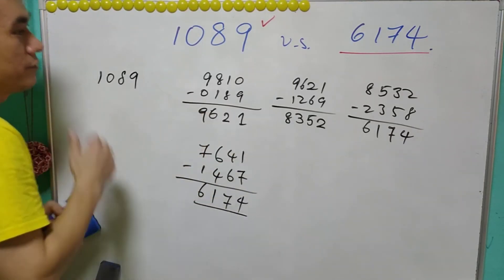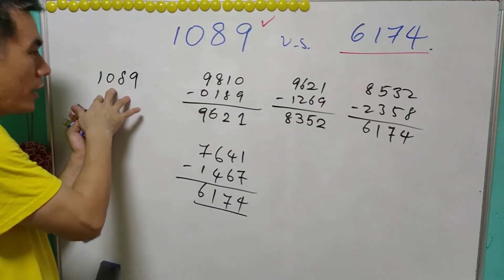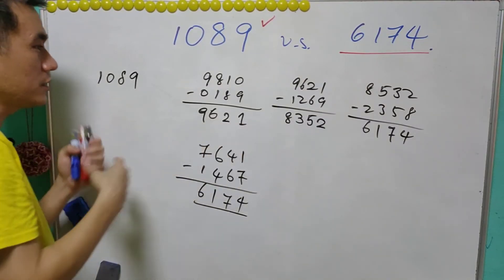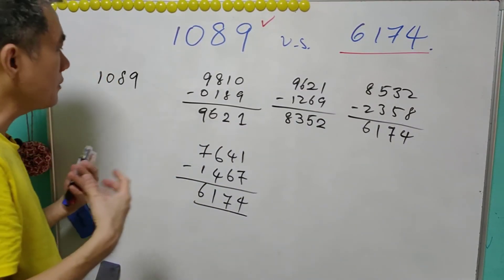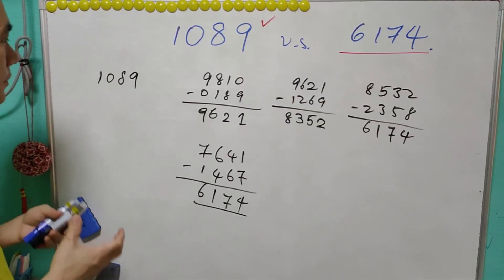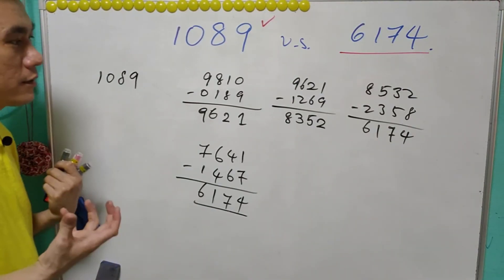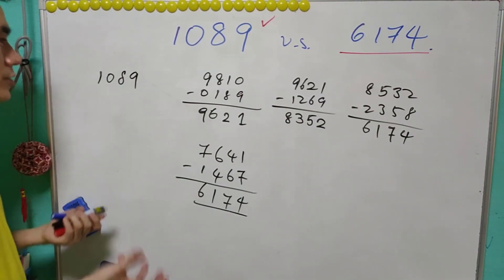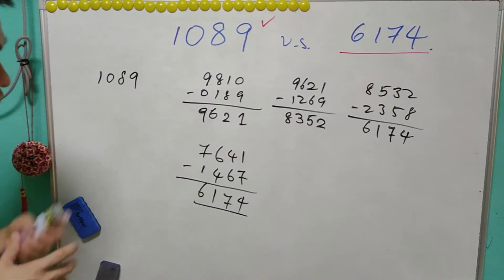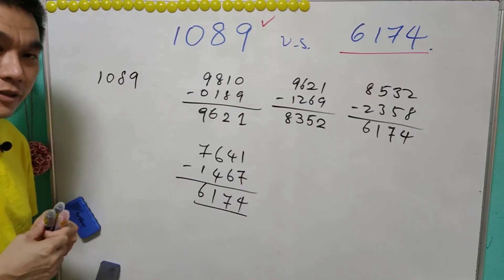So far it seems that there is no proof why all these numbers will go to this 6174, but I think people have tried for all possible four digits and all of them get the same conclusion. You can try and have fun. That's all for today's lesson. I'll see you again, bye.